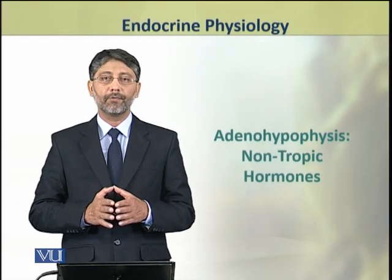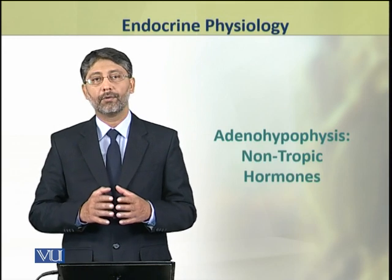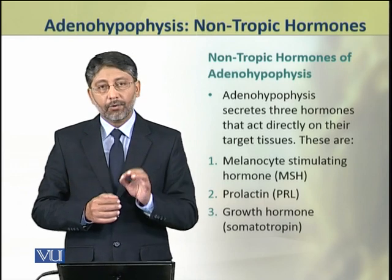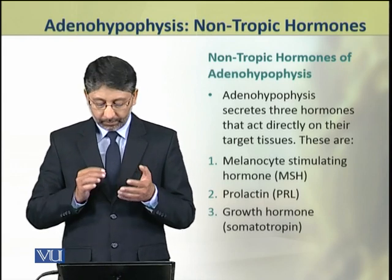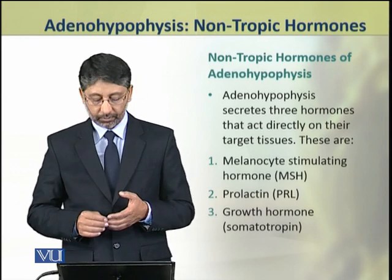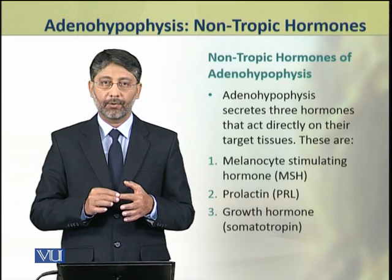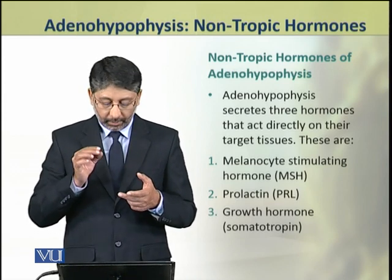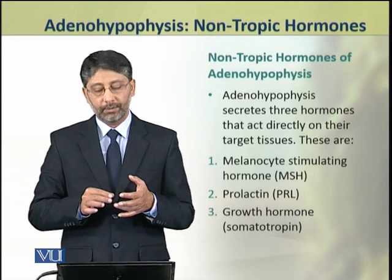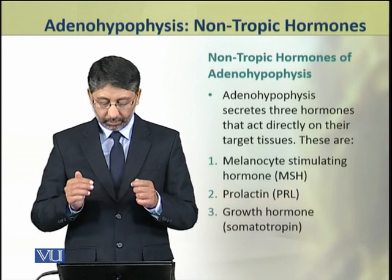Dear students, in this topic we shall discuss the non-tropic hormones of adenohypophysis. Adenohypophysis secretes three hormones that act directly on their target tissues. These include melanocyte stimulating hormone MSH, prolactin PRL, and growth hormone GH, which is also called somatotrophin.